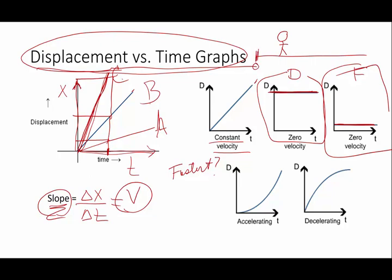So if this is my origin, what's happening is object F is stopped really close to my origin, and object D, or person D, is stopped a much further distance from my origin. Both of them have a slope of 0, meaning a velocity of 0, but their positions happen to be different, and we note that by different positions on the displacement part of the graph.